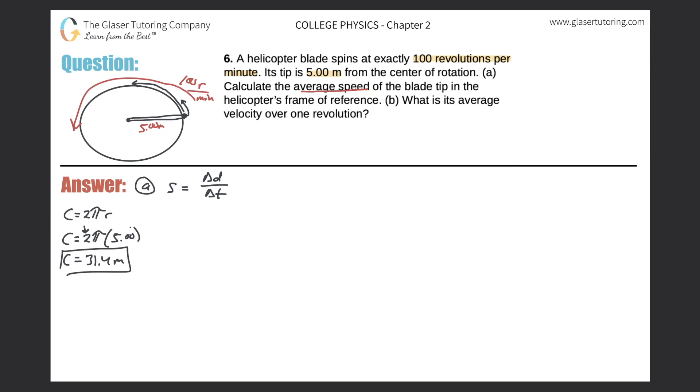We know the circumference - that's the distance that the tip of the fan blade is traveling. That's the distance it travels in one revolution. So what I can do now: if I know that's the distance it takes to travel one revolution, and we also know that it did 100 revolutions per minute...